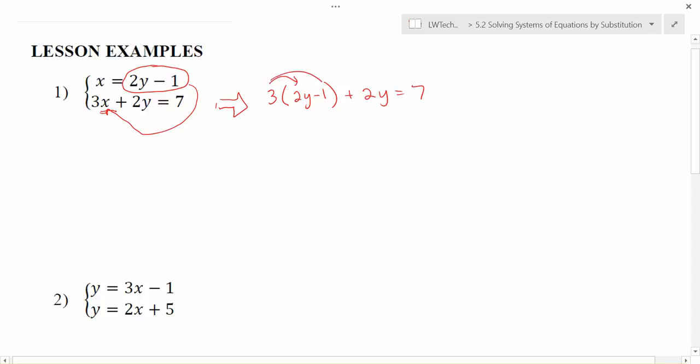I want to get rid of the parentheses. So I end up with 6y minus 3 plus 2y equals 7. I'd like to get the y by itself, but right now there's two of them. They're on the same side of the equation, so I just go ahead and do what it says. 6y plus 2y is 8y. I can combine those like terms.